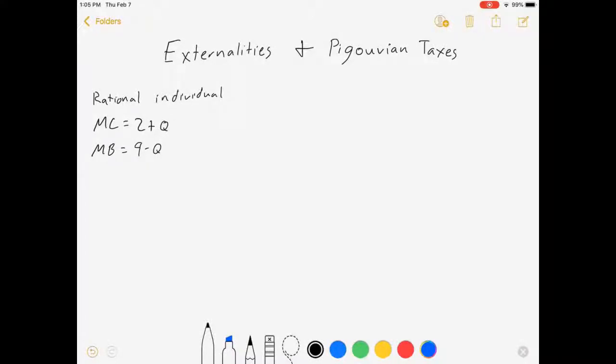Hello everyone, welcome to my video on externalities and Pigouvian taxes. We're going to be looking today at a form of market failure which is where decision makers in a marketplace do not account for all of the costs of their actions.